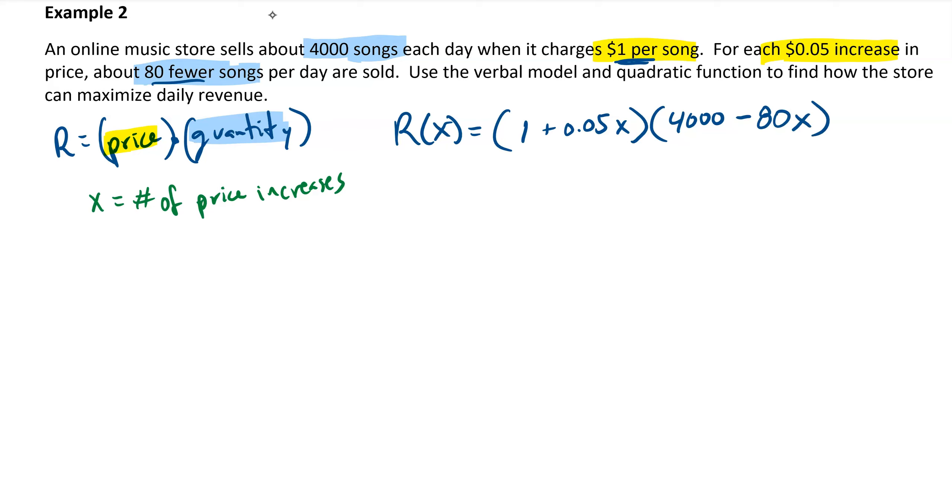I'll point out from the get-go that our a value is negative. If I multiplied this out, we would get negative 4x squared plus some other terms. So the value for a equals negative 4. So I know, similar to our previous example, I'm going to have a parabola that opens downward. Also, similar to the first example, I can find the x-intercepts by setting each of those expressions equal to 0.